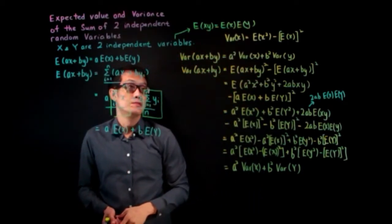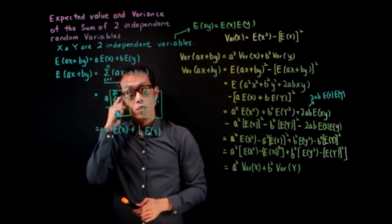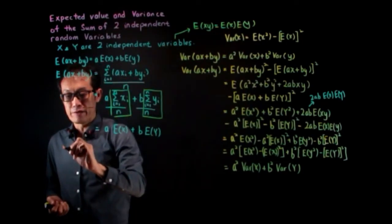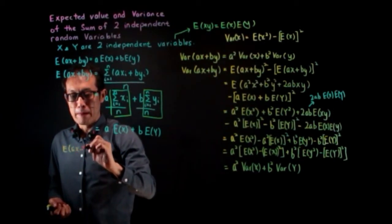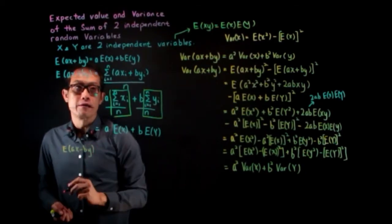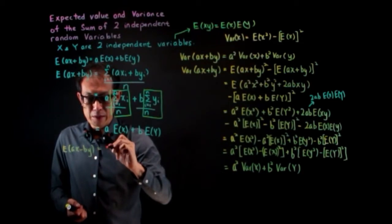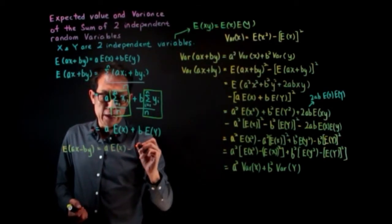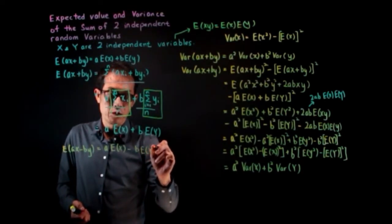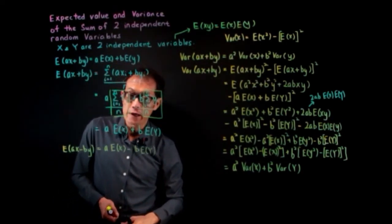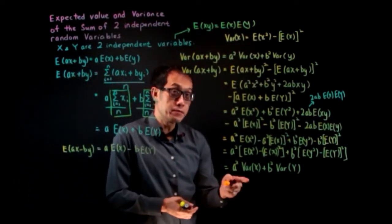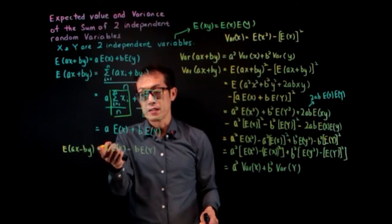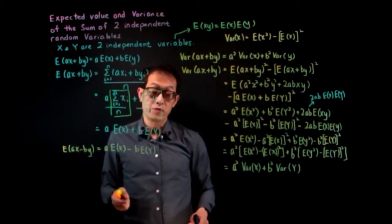We have finished the proof of the second formula. Now what happens if this is minus — that is, aX minus bY? In the same way it can be easily proven that the expected value of aX minus bY equals a times expected value of X minus b times expected value of Y. This is very simple: you just substitute B as minus B and you can prove this formula.